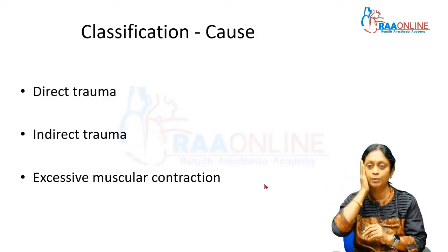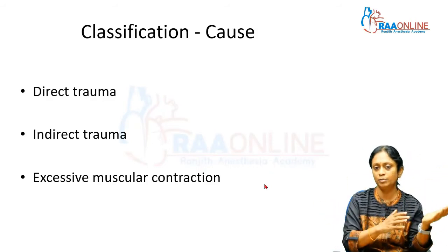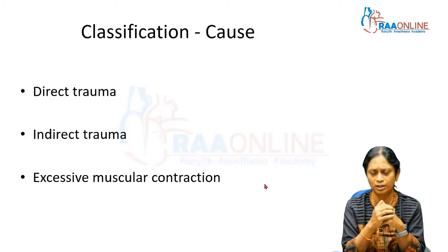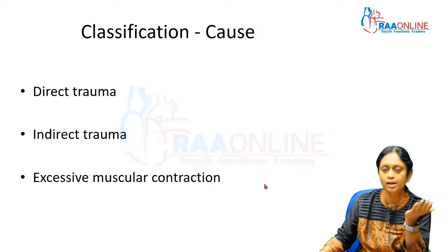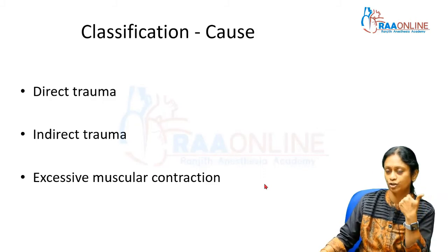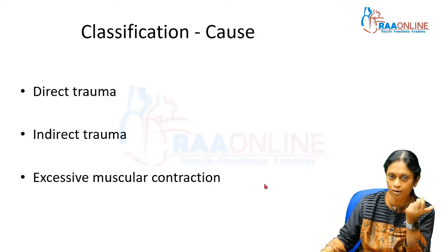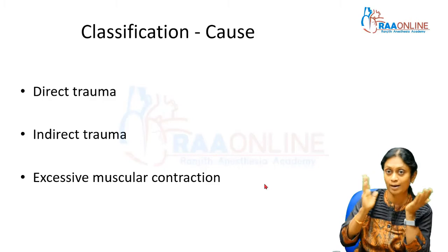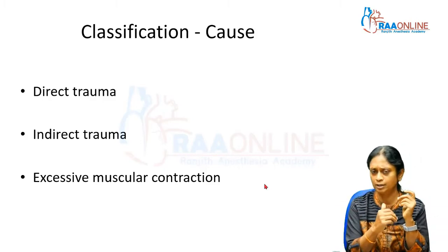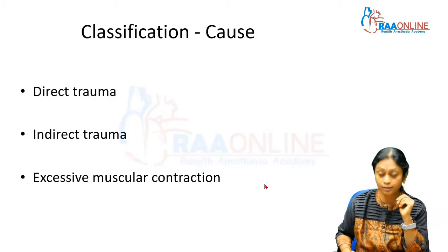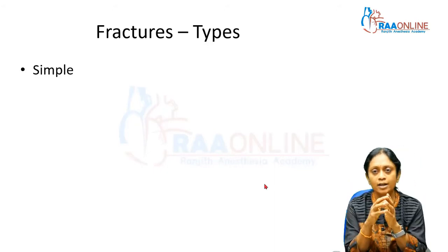For example, if I punch you on one side, nothing happens on that side but the condyle on the opposite side fractures — that is indirect trauma. Due to excess muscular contraction, if your mouth is open and you fall, you can fracture. Gusman's fracture is where a person standing for a long period develops a syncopal episode, falls, lands on the chin, and fractures bilateral condyles — that is a Gusman's fracture.